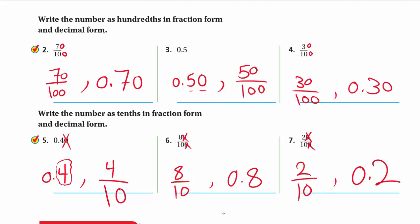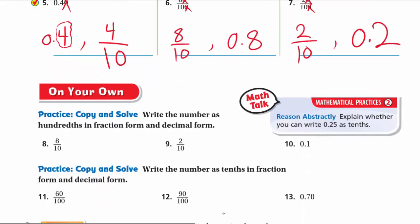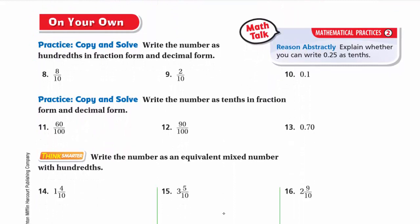So it's really simple: you can add zeros to make hundredths, and cancel zeros to make tenths. Hope you enjoyed the lesson. Now it's your turn — solve the questions on your own, and if you're in my class we'll discuss your answers in the live session. Have a nice day, goodbye!